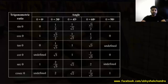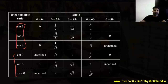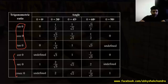This table shows trigonometric ratios of standard angles, and you'll have to memorize it. Basically, you must memorize the values of sine, cos, and tan for the standard angles. The remaining three ratios you can get by taking the reciprocal. Make sure you learn these values by heart.